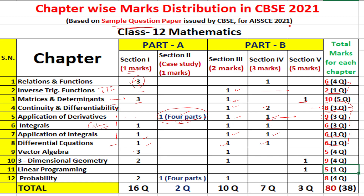For Vector Algebra, three questions of 1 mark and one question of 2 marks — four questions totalling 5 marks. Note the number of questions is high but marks are fewer. For 3D Geometry, two questions of 1 mark, one question of 2 marks, and one important question of 5 marks — four questions totalling 9 marks may be asked.